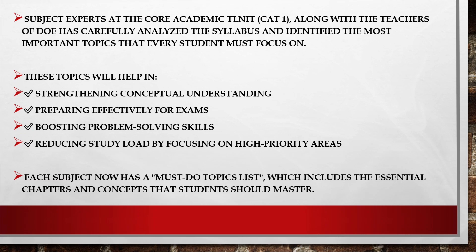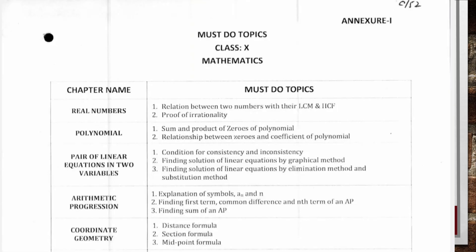Now let us see the subject-wise must-do topic list. First, let us see the must-do topics for Class 10 Mathematics. From the chapter Real Numbers, two must topics are: first, relation between two numbers with their LCM and HCF; second, proof of irrationality.